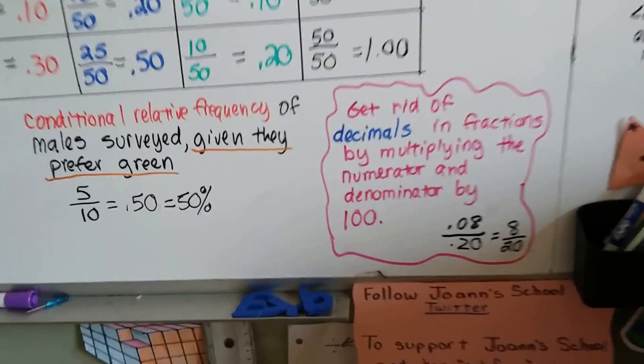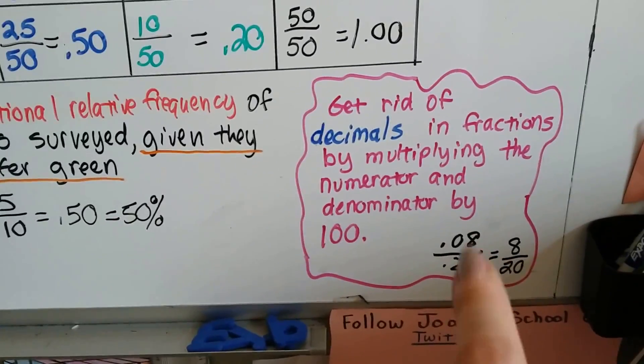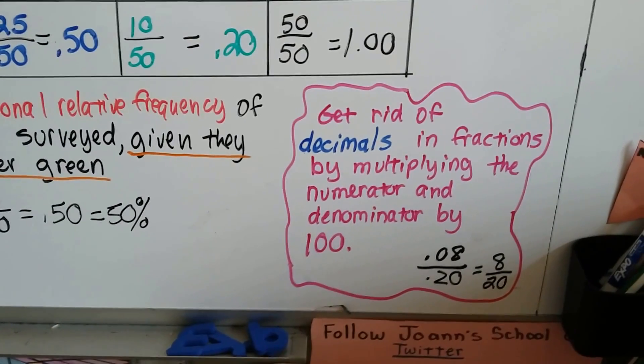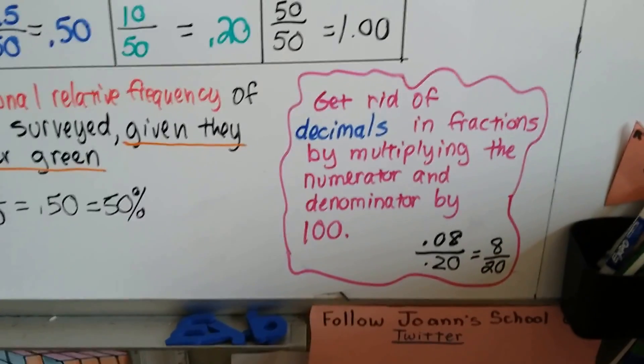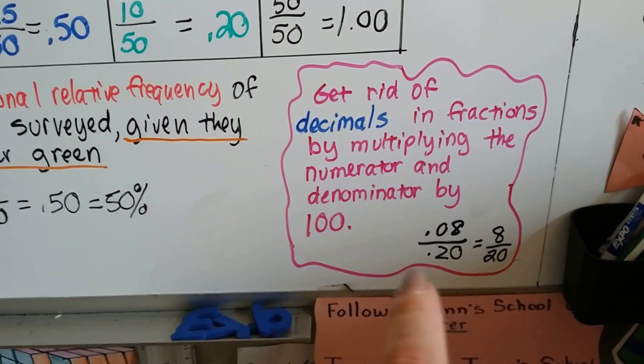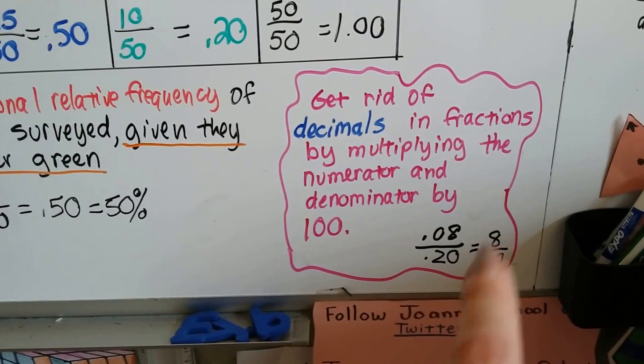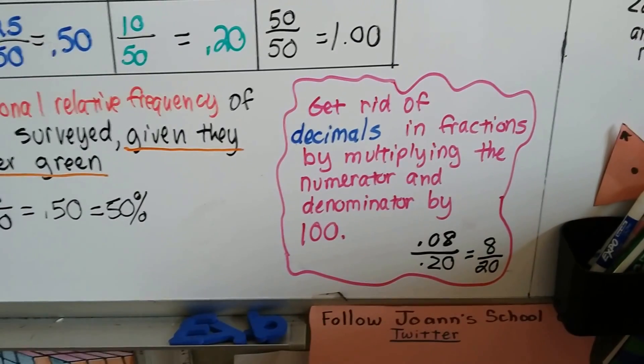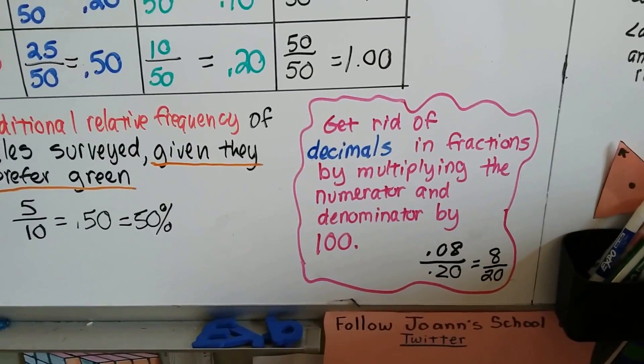Now, sometimes you're going to come across having decimals in your fractions. All you have to do is multiply the numerator and denominator by 100, and that'll get rid of them. You multiply 0.08 and 0.20 by 100, and you're going to end up with 8 twentieths.